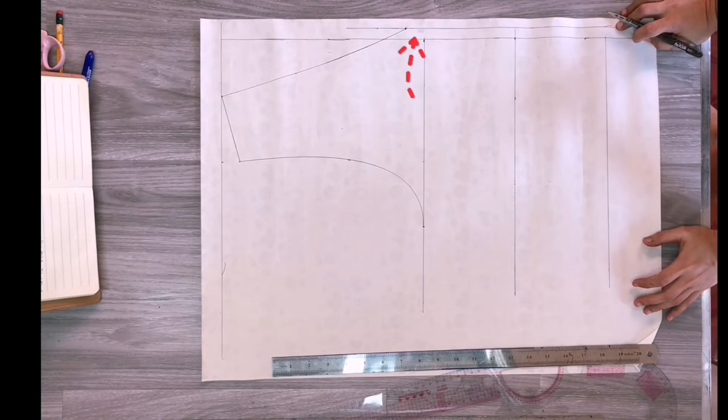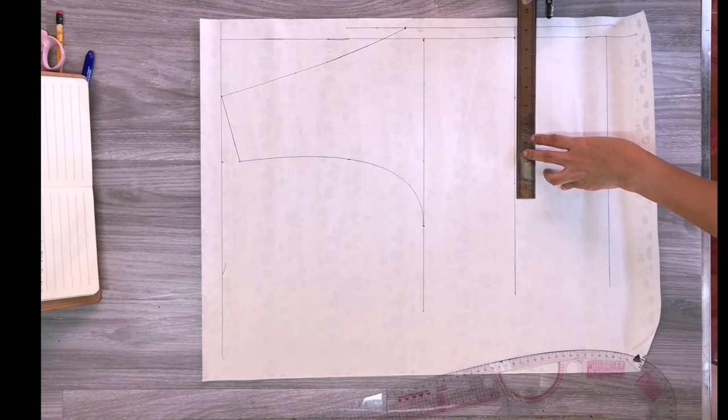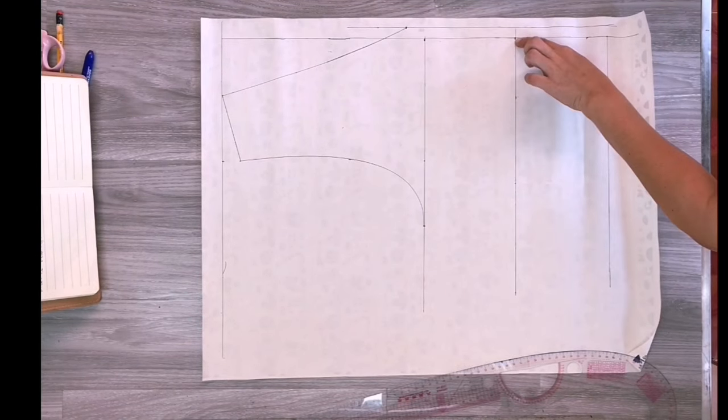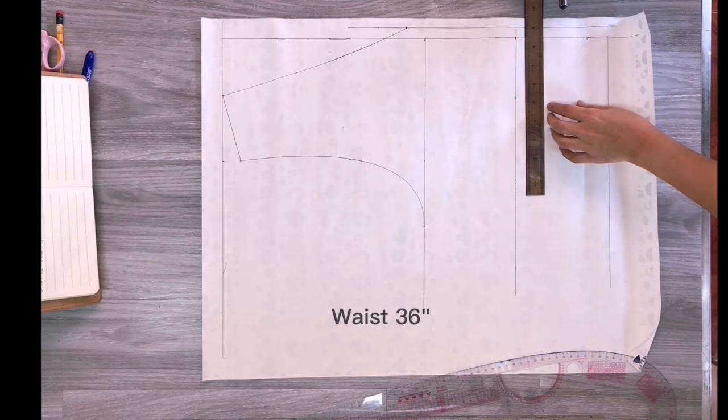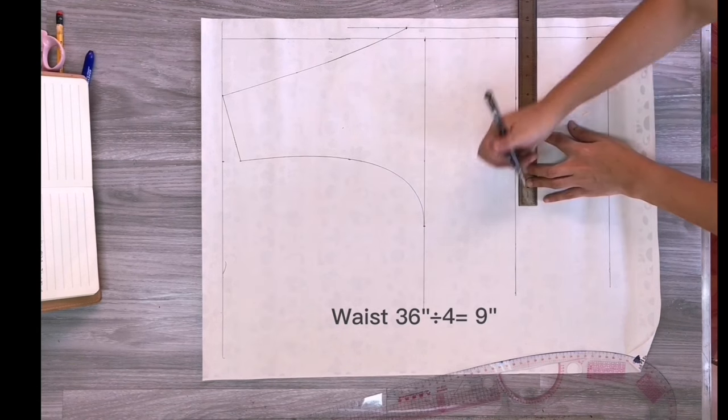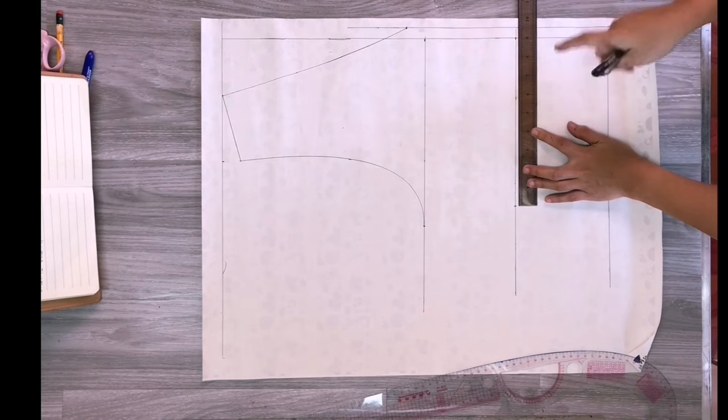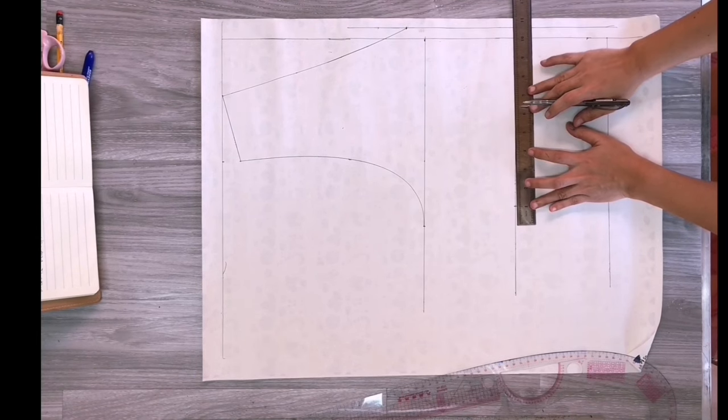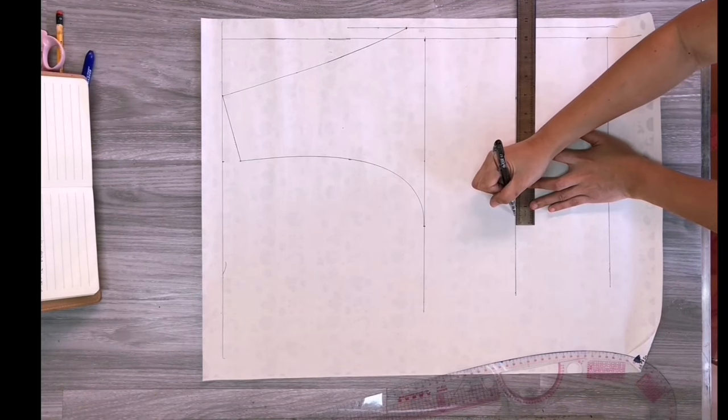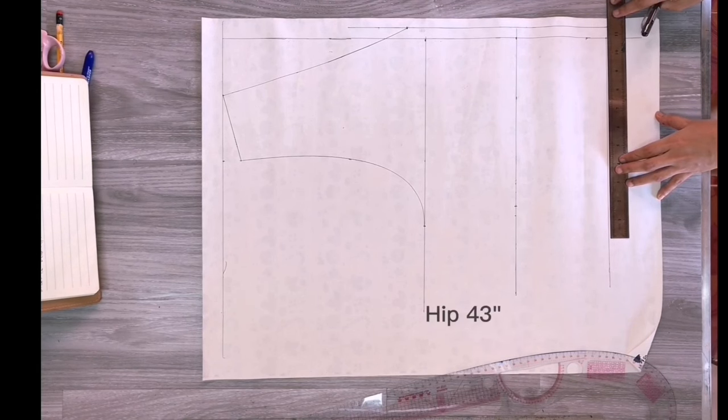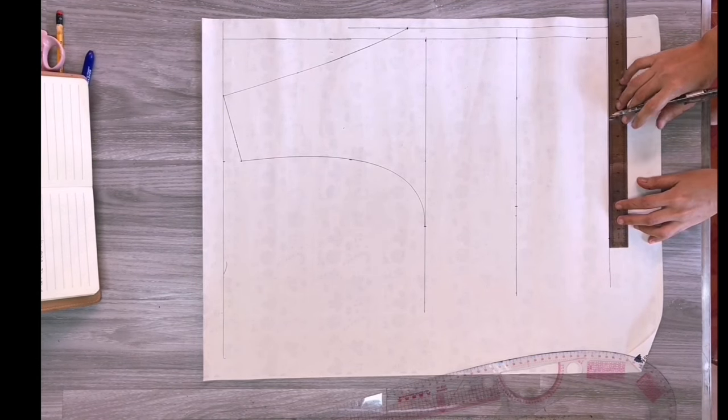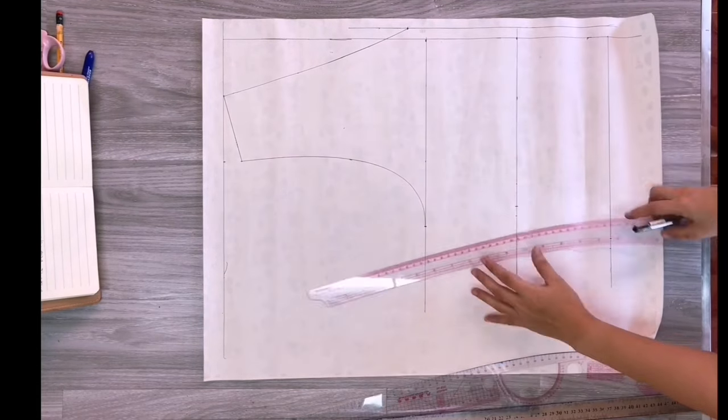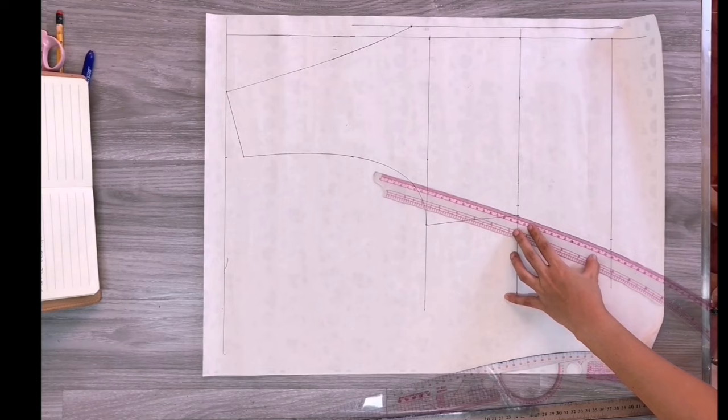Next we're gonna apply the waist measurement. Again, this is the base of our measurement. Since this part is the allowance for bottom placement, this is 36 inches. A quarter of it is 9 inches. Since we will be putting one half inch dart later, we will add it here on the side. Next we're gonna apply the hip measurement, which is 43 inches. Again, one fourth of it we're gonna use, so 10.75 inches, plus one half inch for the dart. We can now connect points of chest, waist, and hip line.